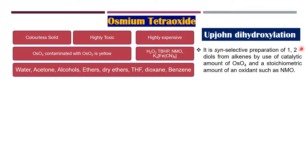The next part will be Upjohn dihydroxylation. This is the synthesis of 1,2-diols having syn selective stereochemistry from alkenes, by use of a catalytic amount of osmium tetroxide and a stoichiometric amount of an oxidant such as NMO. Whenever you use osmium tetroxide in combination with NMO and synthesis of syn selective 1,2-diols happens from alkenes, that is known as Upjohn dihydroxylation.